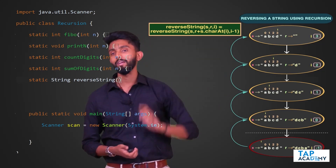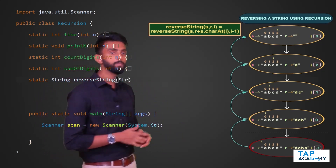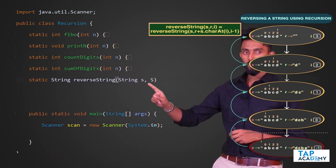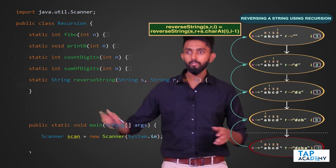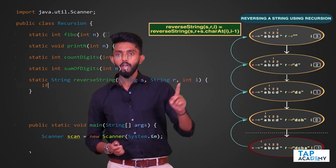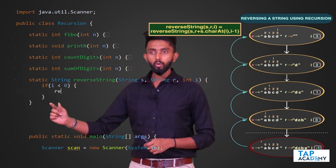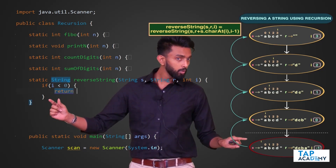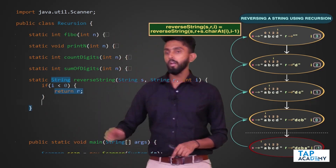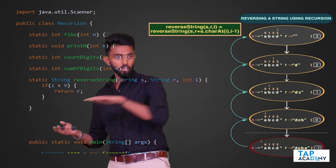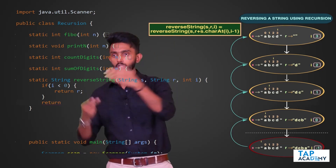In the function, the parameters are `String s`, `String R` (empty string), and `int i`. First, the base condition: if `i` is less than 0, return `R` because by that point `R` holds the complete reversed string.